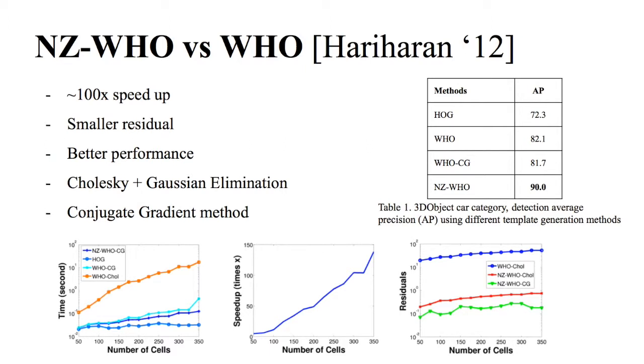NZ-WHO template is two orders of magnitude faster to generate, numerically stable and accurate, and performs better in a standard real image dataset compared to WHO.